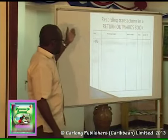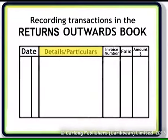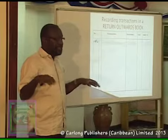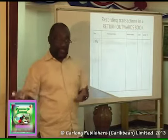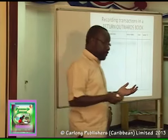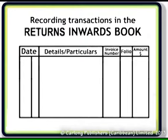If you look at the detail, it's important you follow the particulars, the relevant reference number, the page number, and the amount. All these books have this in common, whether it is a purchases book, sales book, returns inward book, or returns outward book — the same type of information.